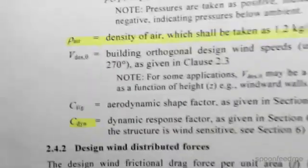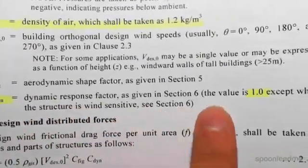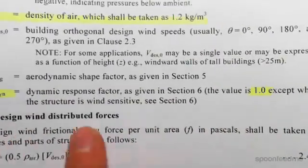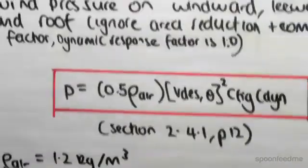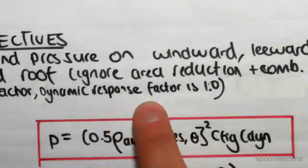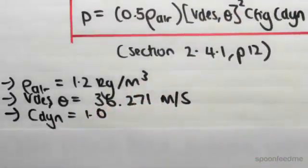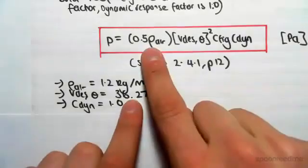It says here the dynamic response factor shall be taken as 1.0 except where the structure is wind sensitive. There's no mention of the structure being wind sensitive, and the question also said the dynamic response factor is one, so we just take it as one. So far we've already worked out those factors. We just need to find C_fig.